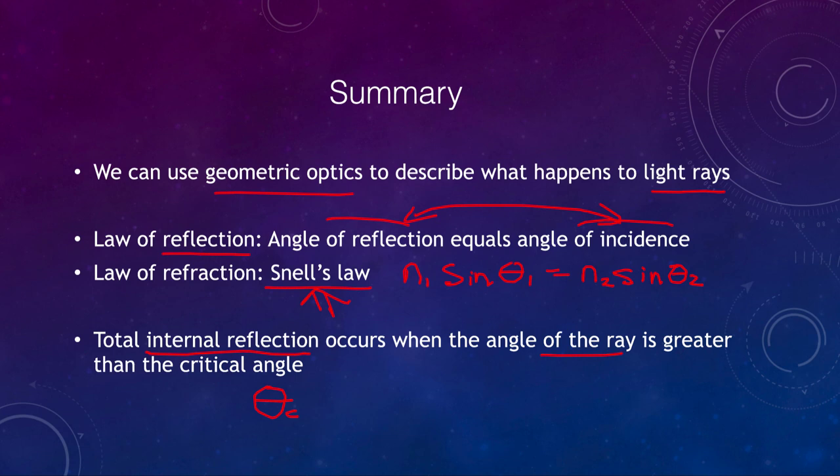To summarize: we used geometric optics to describe what happens to light. The law of reflection states that the angle of incidence equals the angle of reflection. Snell's law describes refraction: n₁ sin(θ₁) = n₂ sin(θ₂). And total internal reflection occurs when the angle of the ray exceeds the critical angle θ_c, so all light is reflected at the boundary and none is refracted out. That concludes this lecture on optics — reflection and refraction. We'll be back next time for another topic in physical science.